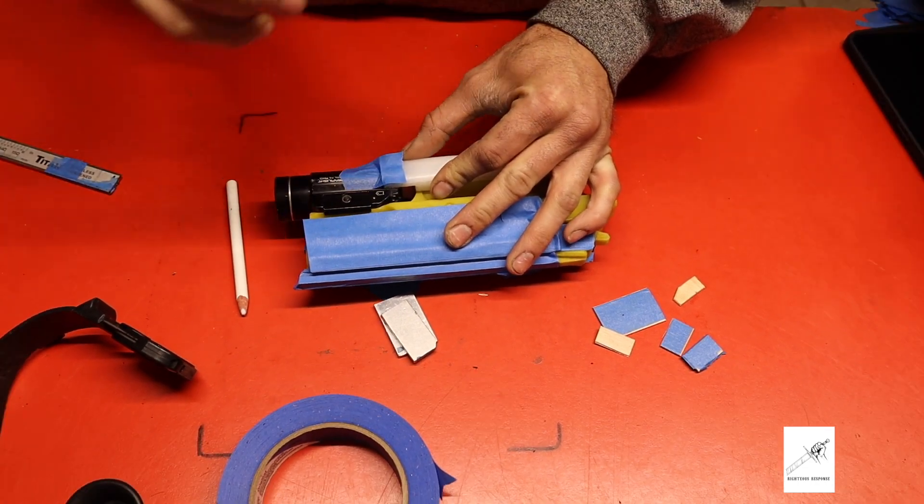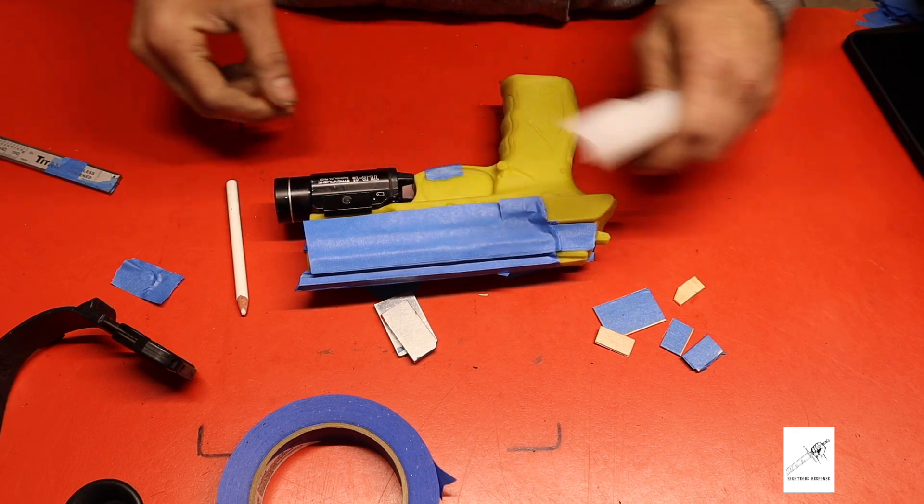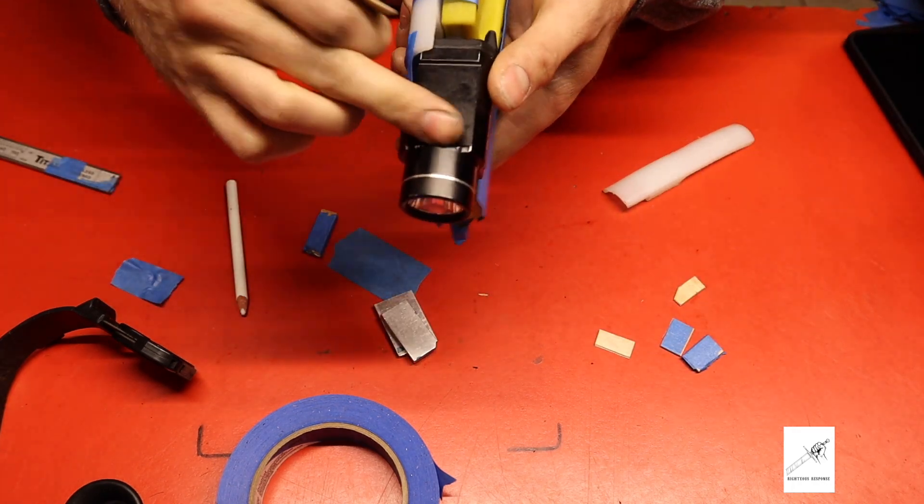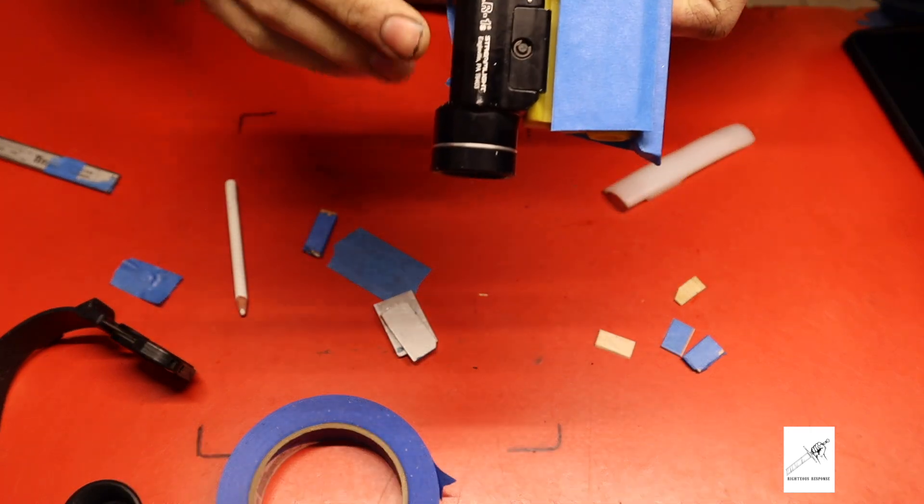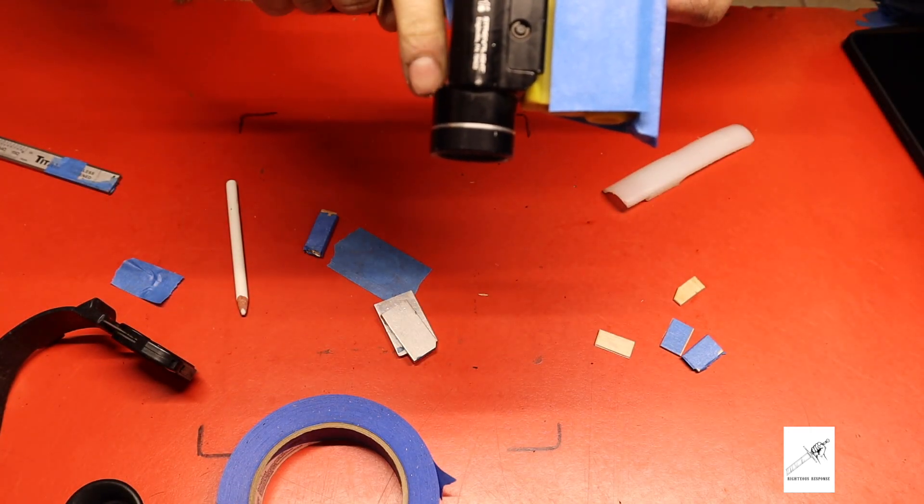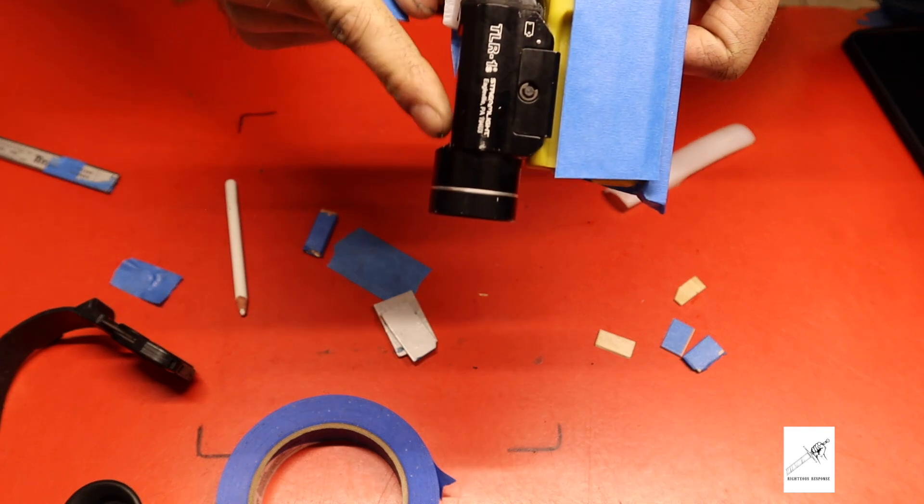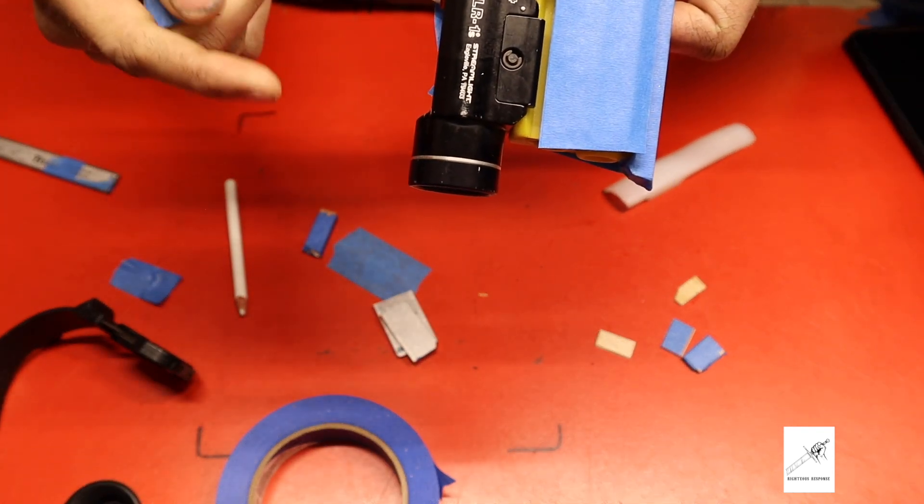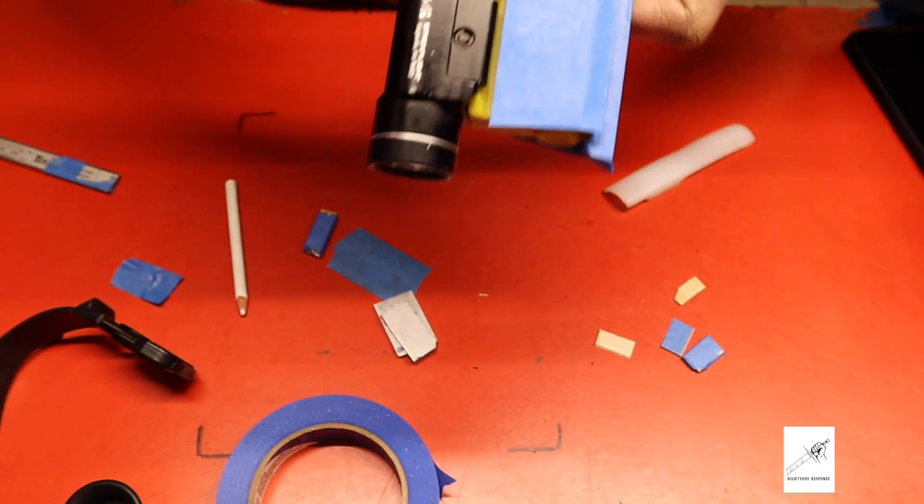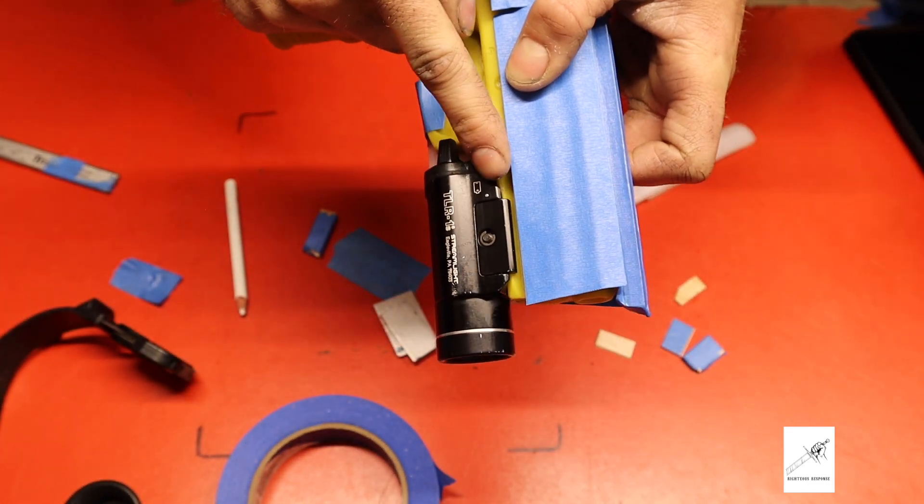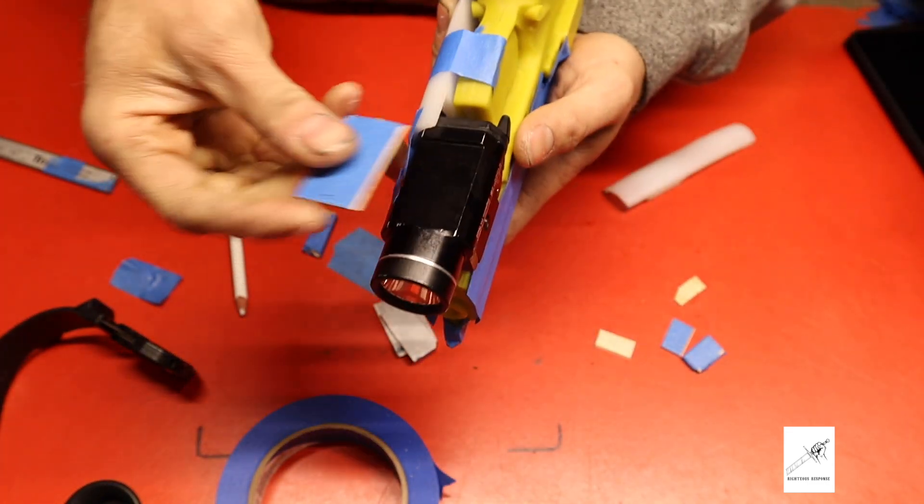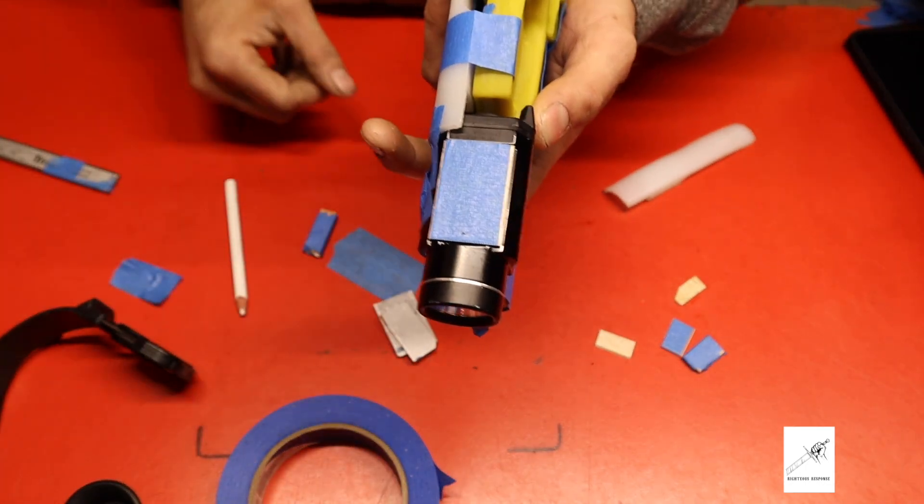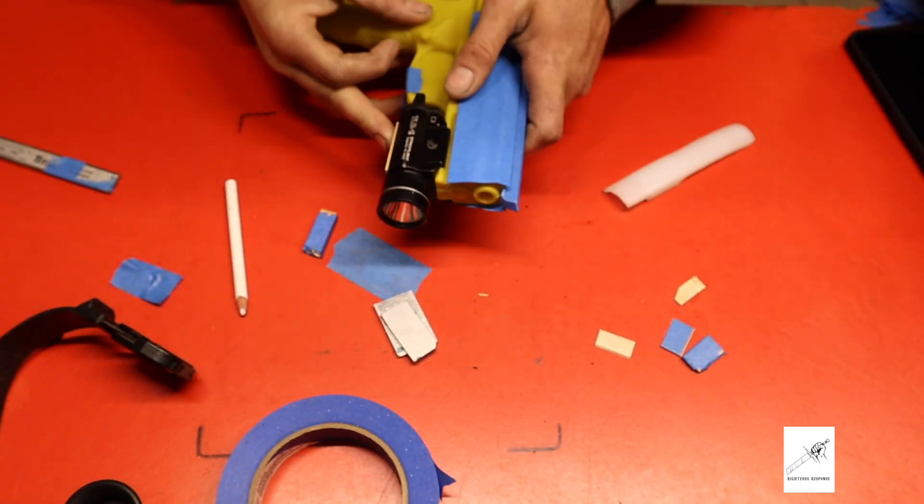I did forget one thing before I get too far. I want to block this section of the light off. What tends to happen is the kydex will wrap around here like it's supposed to, and then you'll get a retention point right here, which isn't bad. You can design the holster that way, but I prefer my retention point to be right here. So we're going to tape that off, just add a little bit of blocking so it doesn't fold over too much.